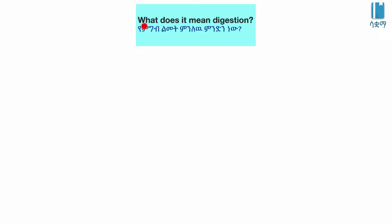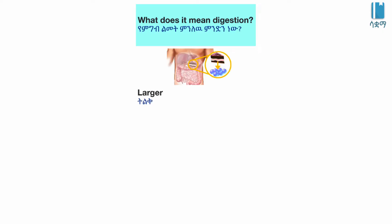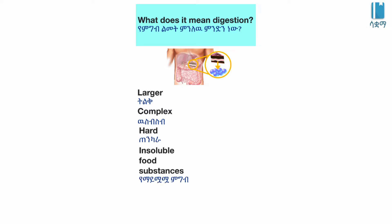What does it mean digestion? Digestion is a process in which larger, complex, hard and insoluble food substances are changed into smaller, simple, easier and soluble substances.